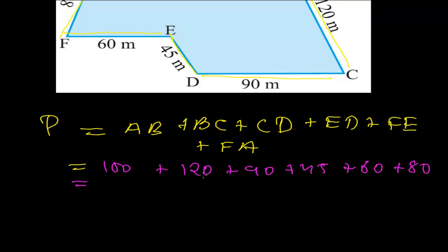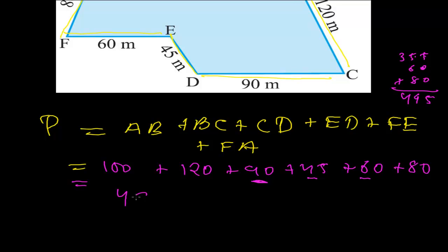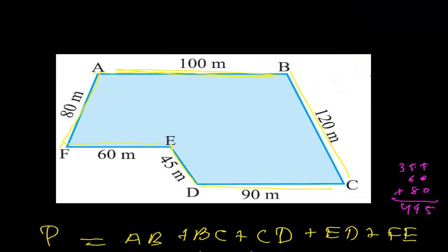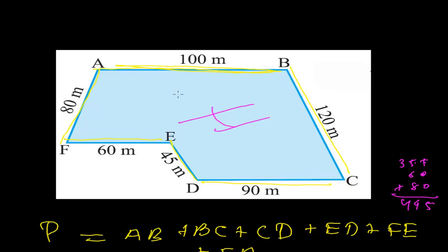Now let's add all of these. 100 plus 120 is 220, plus 90 is 310, plus 45 is 355, plus 60 is 415, plus 80 is 495. So 495 meters is the perimeter of this figure.